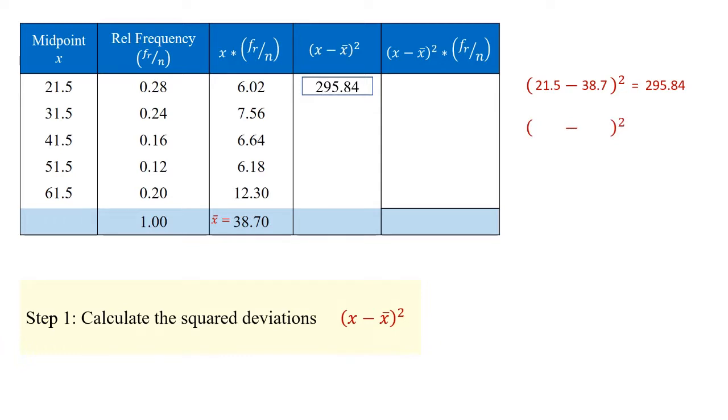Next, we do the same for the age between 27 and 36. Midpoint value in this case is 31.5. Once again, we subtract the weighted mean, 38.7, square this, and it gives us a total of 51.84.